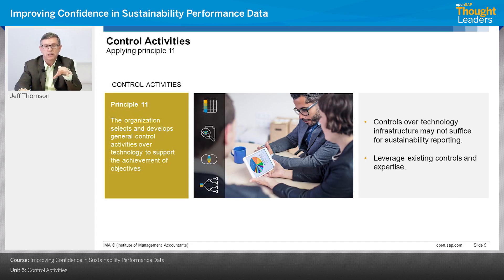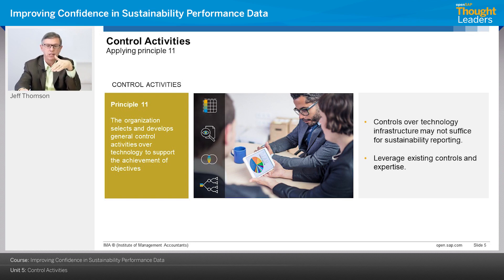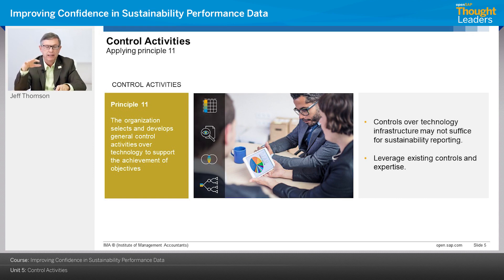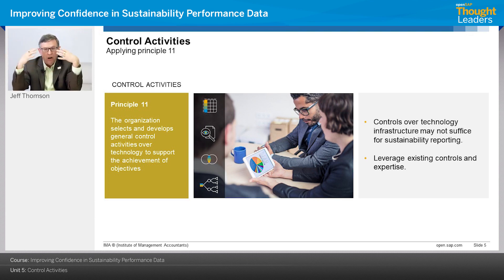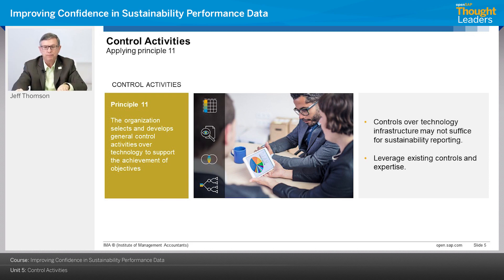Principle 11: the organization selects and develops general control activities over technology. There are general controls at the infrastructure level and user controls at the applications layer. Controls over technology infrastructure may not suffice for financial reporting, and may not suffice if your sustainability information is not housed holistically within your overall performance data. The more your sustainability information is housed in disparate systems — ERP, CRM — the harder it will be to put internal controls, assurance, and attestation around that data. Always try to leverage what you do for financial information to the extent possible, resulting in greater consistency, effectiveness, and efficiency.